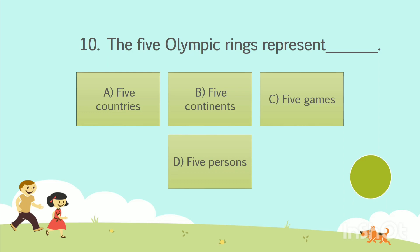Question No. 10: The 5 Olympic rings represent ___. Option A: 5 countries. Option B: 5 continents. Option C: 5 games. Option D: 5 persons. Your time starts now. The answer is Option B: 5 continents.